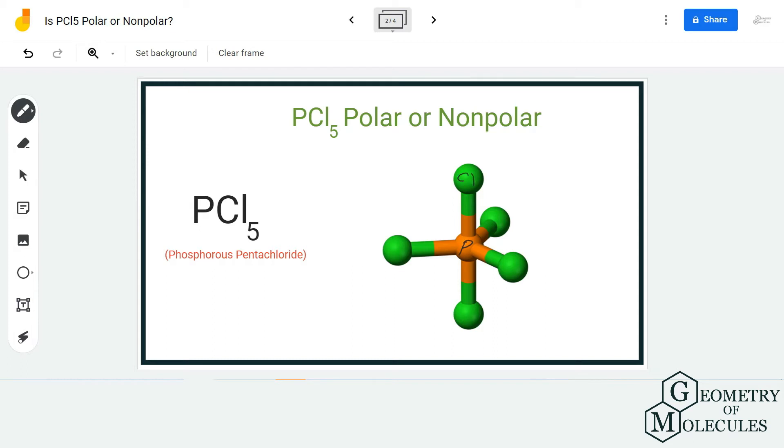Phosphorus's electronegativity value is 2.19, and for chlorine it is 3.16, which is higher than 0.4, and hence the P-Cl bond is a polar bond. Now you might wonder that because these bonds are polar, this might be a polar molecule.